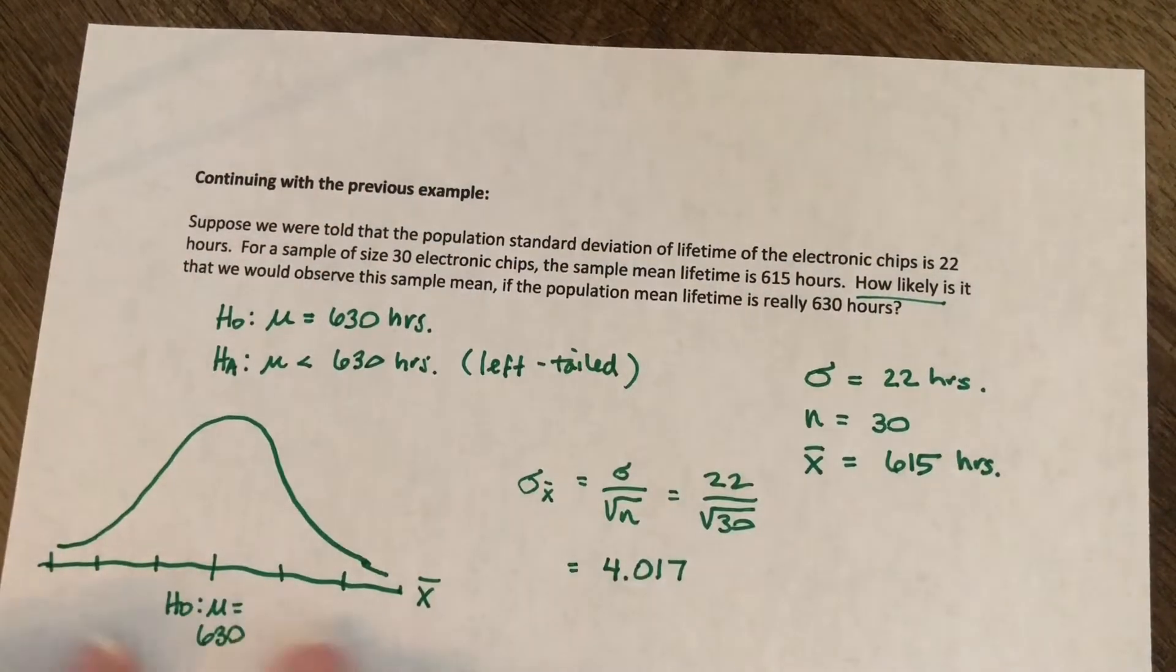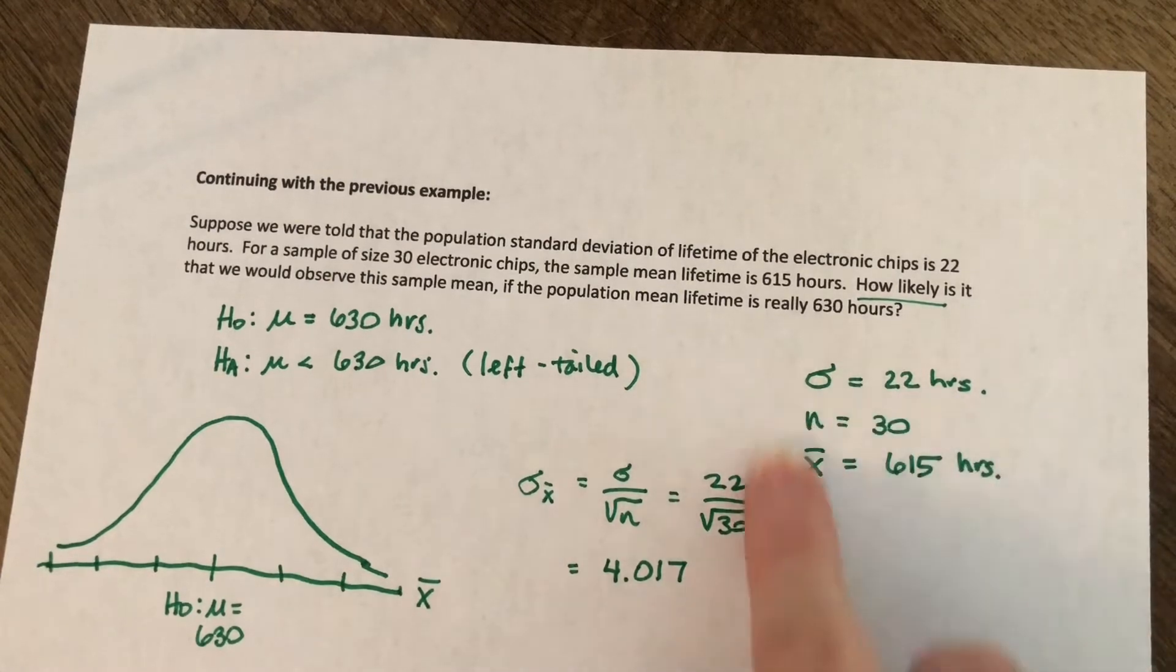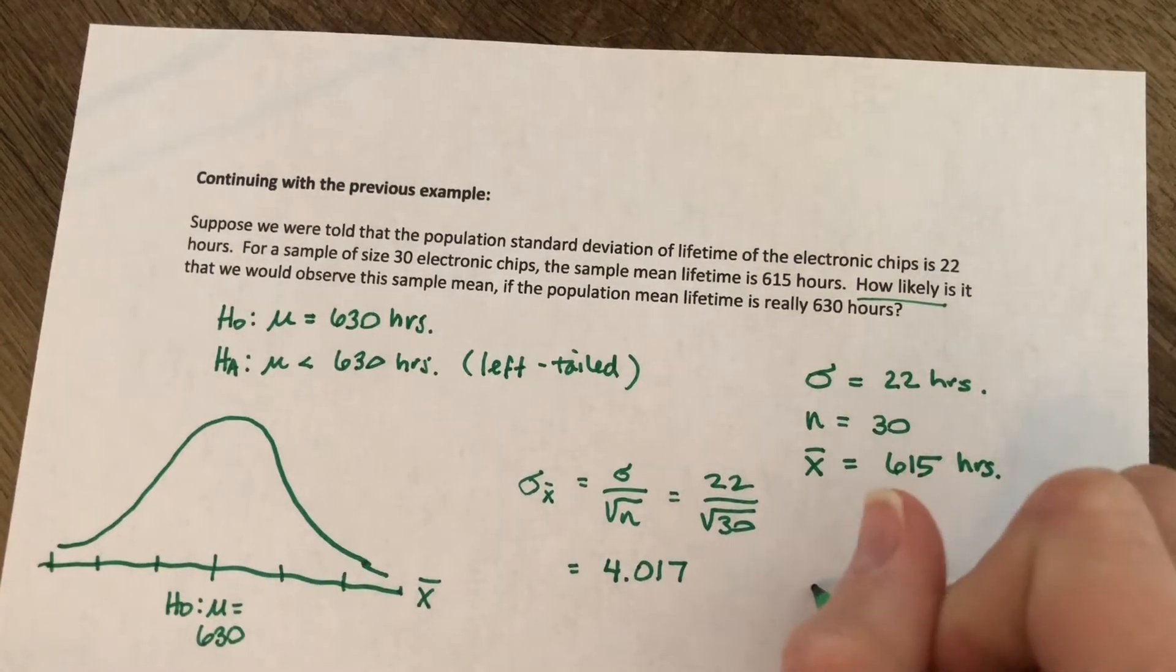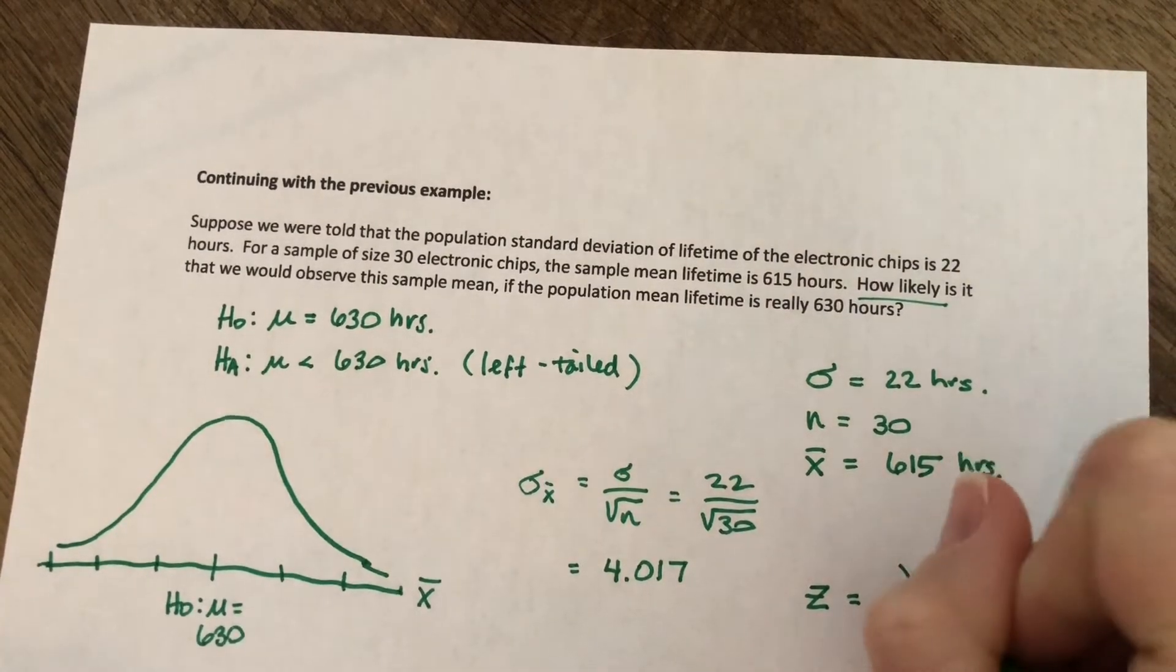And so if we label three standard deviations in each direction, we're going by increments of about 4.017. What we want to do is we want to find out where is this z score, where's x bar going to lie on here? And so we're going to do that again, going back to chapter 6.